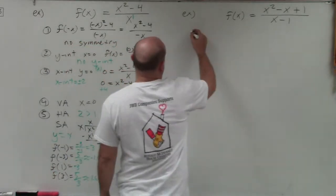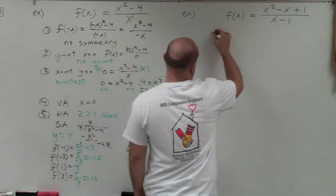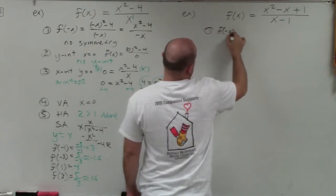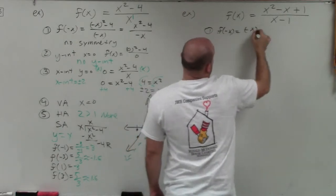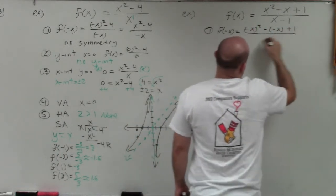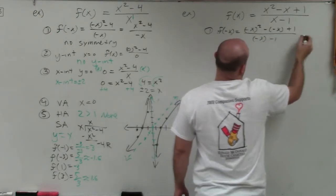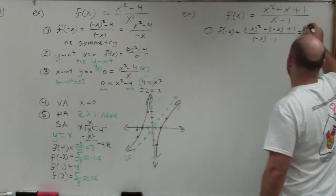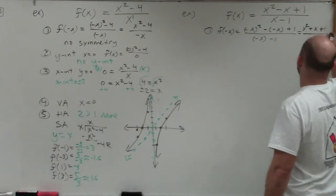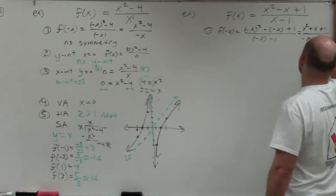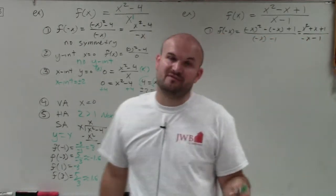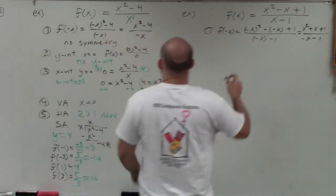Let's get into the next function. First, identify symmetry. I'll compute f of negative x: negative x squared minus negative x plus 1, all over negative x minus 1. That gives x squared plus x plus 1 over negative x minus 1, which is not exactly the same, nor is it the negation of our function. So therefore, there is no symmetry.